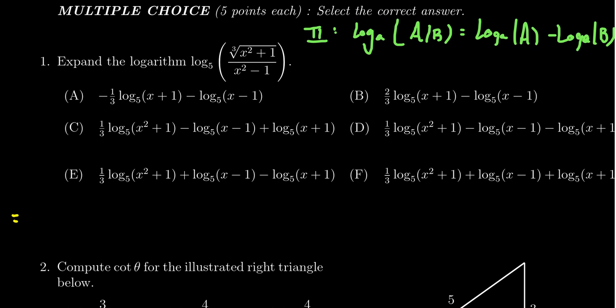So that turns our logarithm expression into log base 5 of the cube root of x squared plus 1 minus the log base 5 of x squared minus 1.